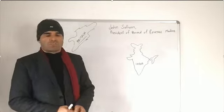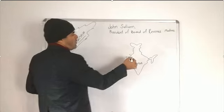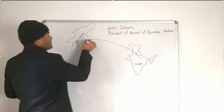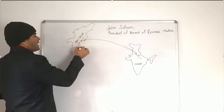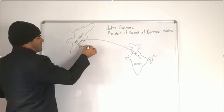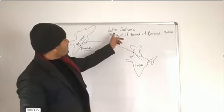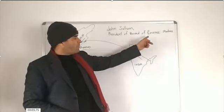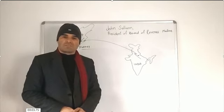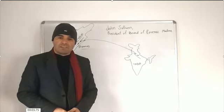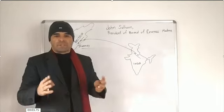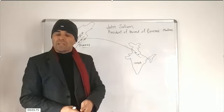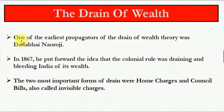Our system acts like a sponge, trying all the good things from the banks of the Ganges and squeezing them down on the banks of the Thames. These are the words of John Sullivan, president of the Board of Revenue, Madras. Our present topic is about the drain of wealth from India to Britain.